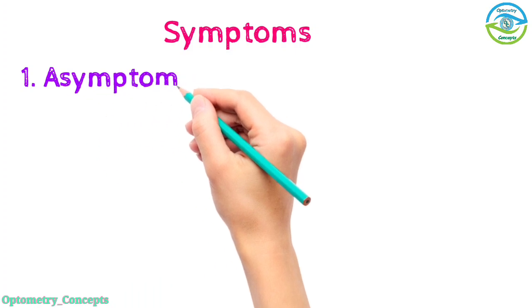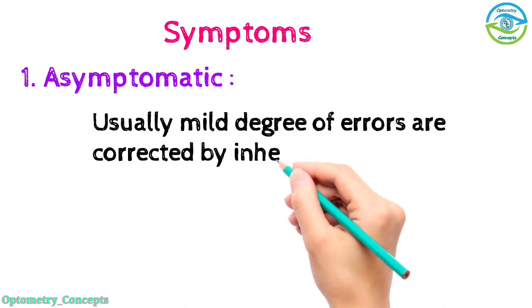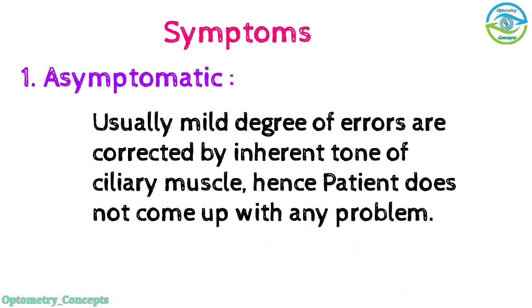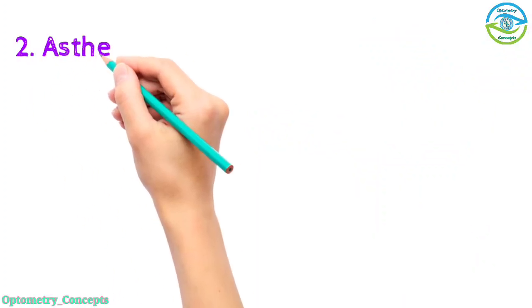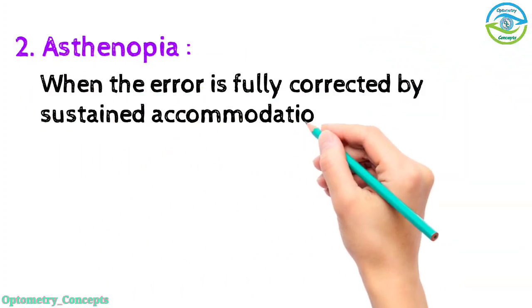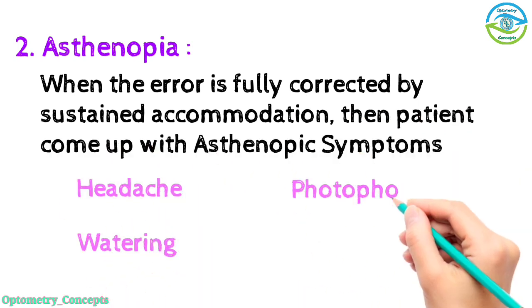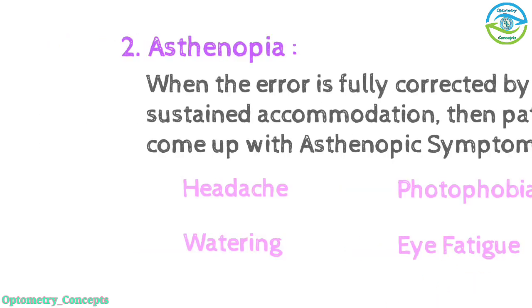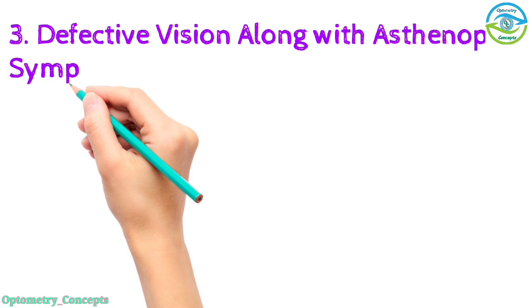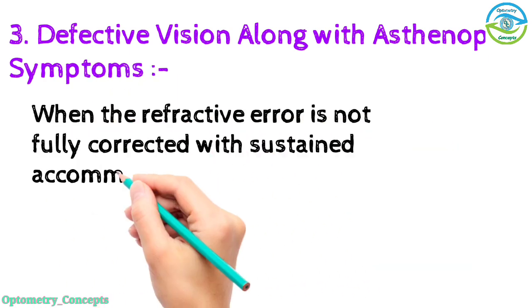Symptoms: asymptomatic - usually, mild degree of errors are corrected by inherent tone of ciliary muscle. Hence, patient does not come up with any kind of problem. Asthenopia - when the error is fully corrected by sustained accommodation, then patient comes up with asthenopic symptoms such as headache, watering, photophobia, eye fatigue, etc.